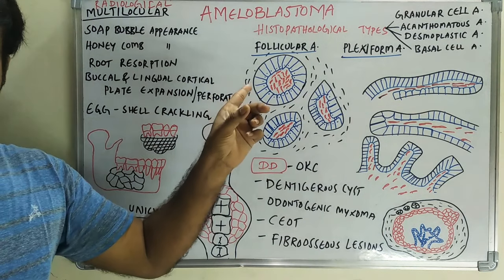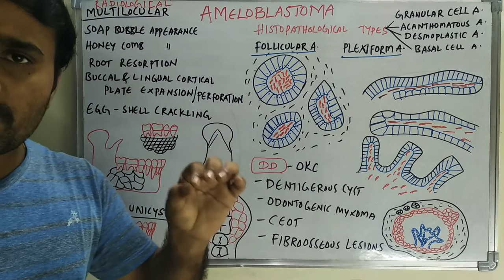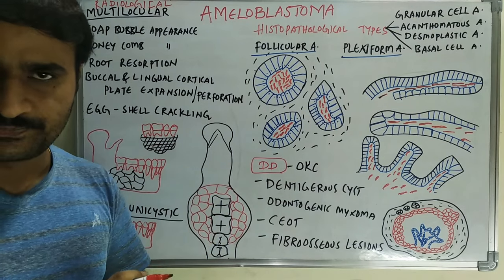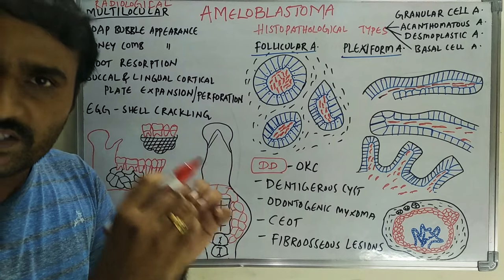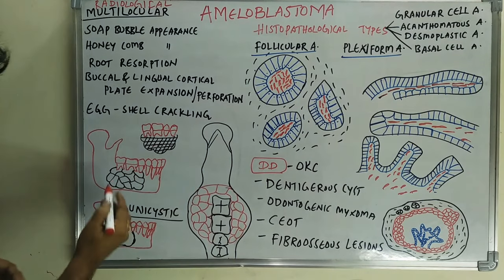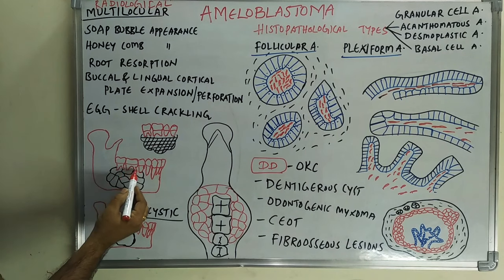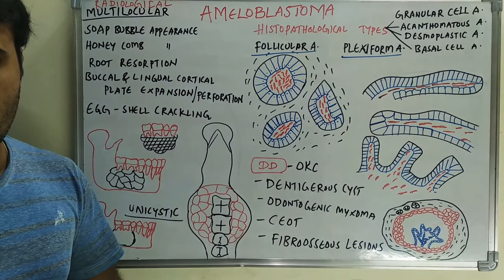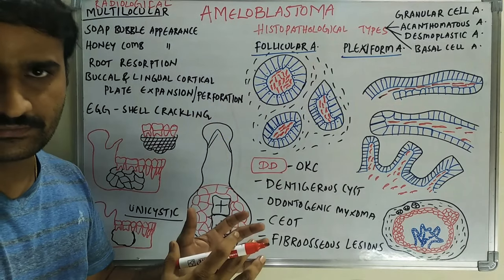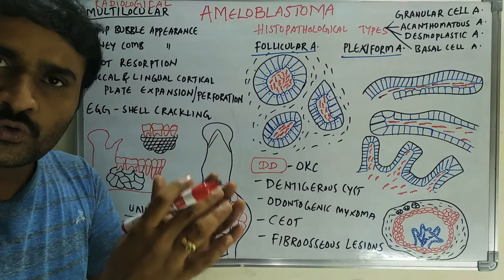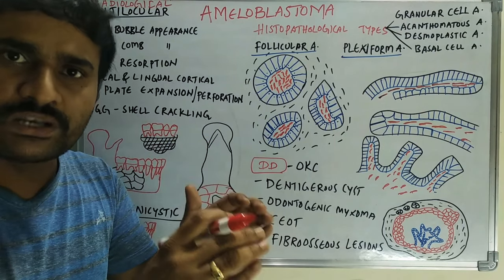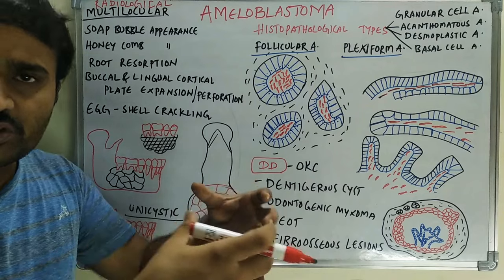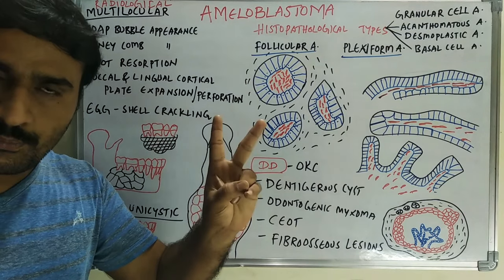There are two main differentiating factors between tumor and cyst. In a tumor there is root resorption rather than root displacement — you can see molar root resorption leading to tooth mobility. In a cyst, root resorption is not commonly seen; instead, roots are displaced due to pressure.